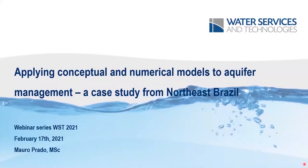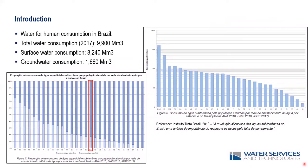Getting into the topic of today's talk, I'll start with some general numbers about the water supply and availability context in Brazil, especially for those who do not live in Brazil. These are bulk numbers for water consumption in 2017, which reached about 10,000 million cubic meters in one year. Most of that water was sourced from surface water bodies — rivers, lakes, etc. — and about 20% of that consumption was sourced from groundwater.